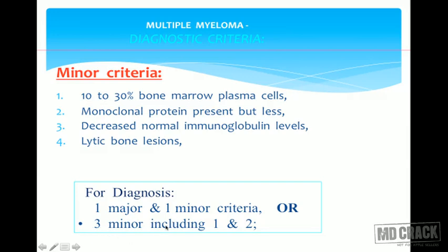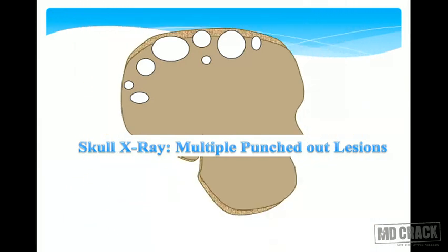To diagnose multiple myeloma, at least one major and one minor criterion should be present, or at least three minor criteria including criteria one and two - meaning 10-30% bone marrow plasma cells and monoclonal protein present. The X-ray classically shows punched-out lesions due to exaggerated osteoclastic activity from elevated interleukin-6. These lesions can range from 1 cm to 4 cm in diameter on skull X-ray. In multiple myeloma, multiple bones are involved, whereas solitary plasmacytoma involves only one bone.